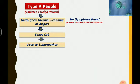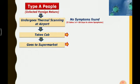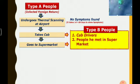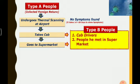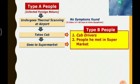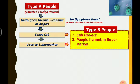Unknowingly, the Type A person will be infecting Type B people. Type B people are, for example, cab drivers — since he took a cab — and people he meets in the supermarket. These categories of people are called Type B people.